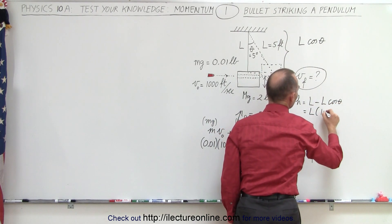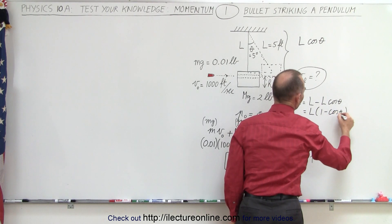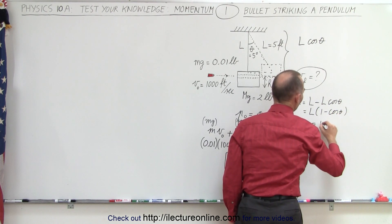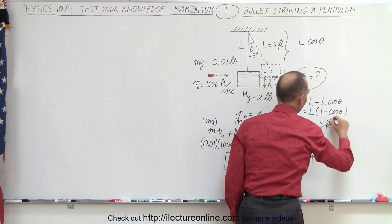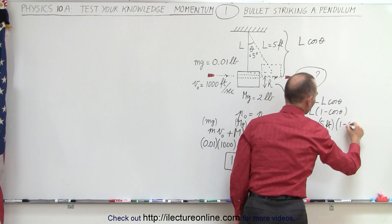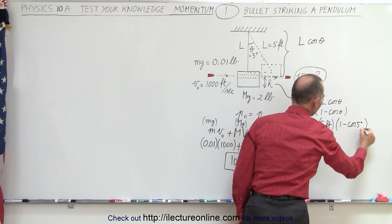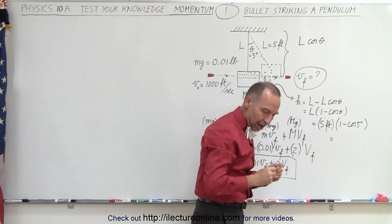The height can be written as L minus that additional height, which is L times cosine of theta, or L times (1 - cosine of theta), and we know that's five degrees.